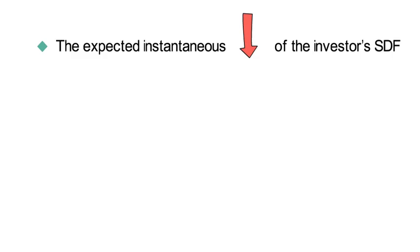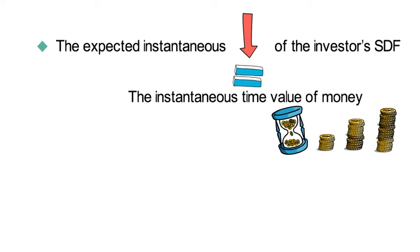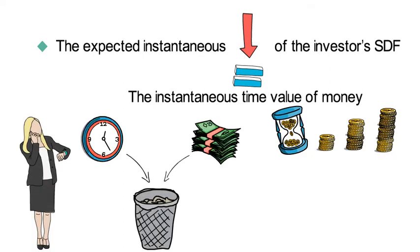And third, from an economic point of view, you see that the expected instantaneous reduction of the investor's stochastic discount factor coincides with the instantaneous time value of money. Hence you see first hand that for an impatient investor, wasting time means losing money.